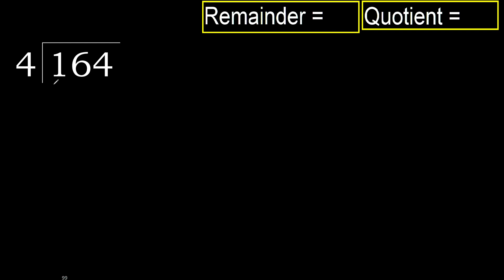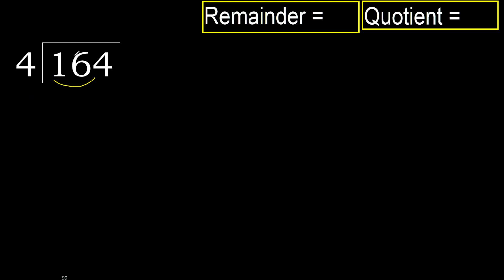164. 1 is less, therefore next. 16 is not less, therefore with 16 and 4, multiply by which number is nearest to 16.